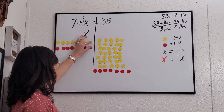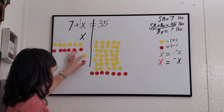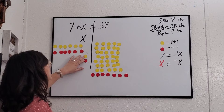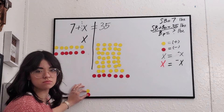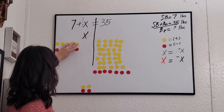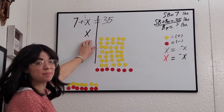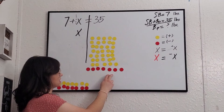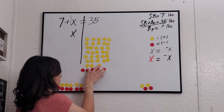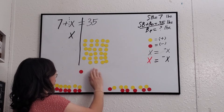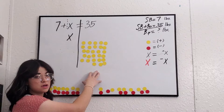One positive yellow counter cancels out one negative red counter — that pair equals zero. So all seven pairs cancel out, leaving us with just x by itself on the left side. We must do the same on the right side, canceling out seven of the positive counters there.